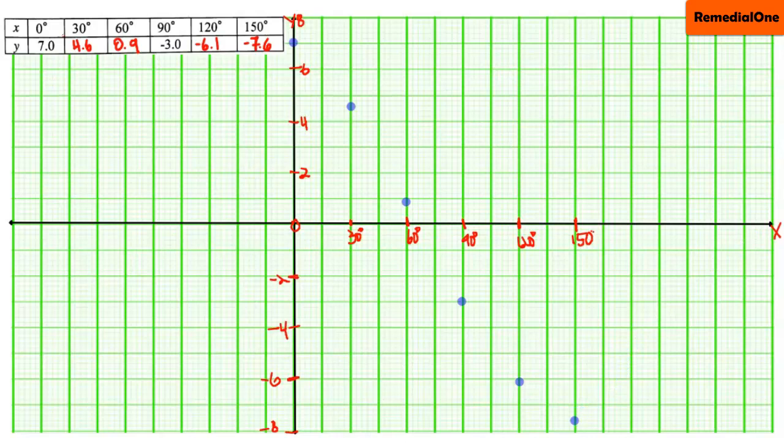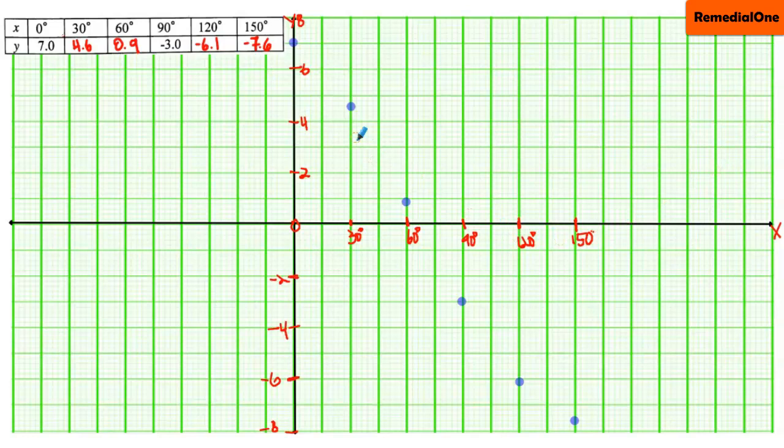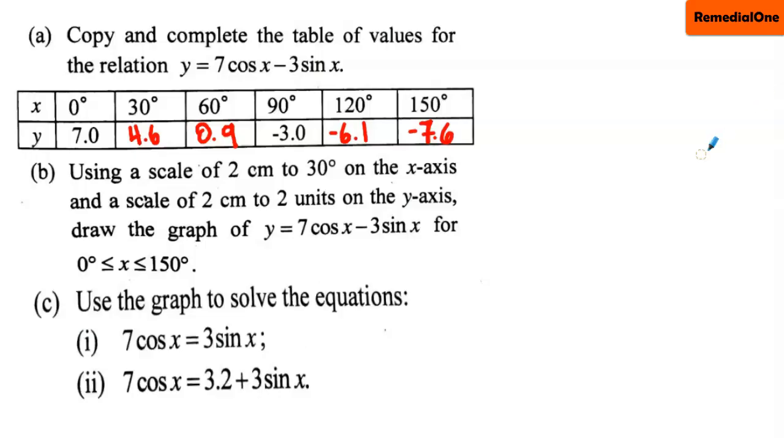Now we can go back to the question to see what they said we have to do. It's a graph. Draw the graph. And now when it comes to this trigonometry, you know that it's not a straight line, so you're going to use a freehand to do that. So let's go ahead and use our freehand to join points together.